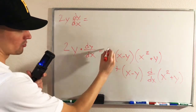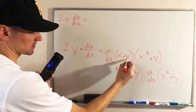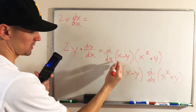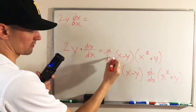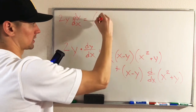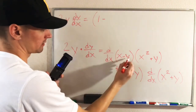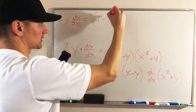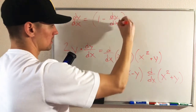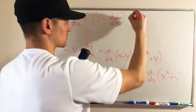And then the derivative with respect to x of x minus y — we can just think of each of these individually. The derivative of x is just 1. So we're going to get 1 minus the derivative of y with respect to x, which is just dy/dx. And then that's going to be times x squared plus y.